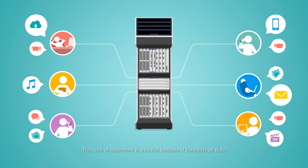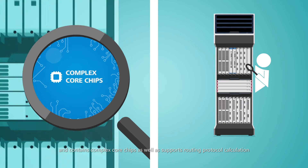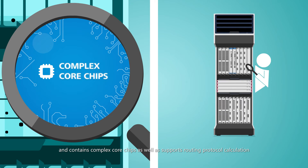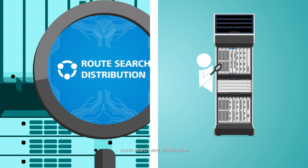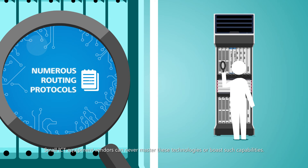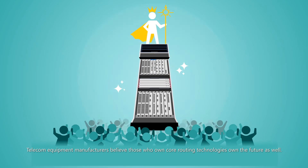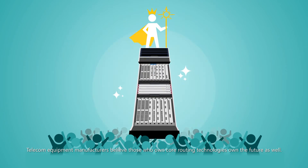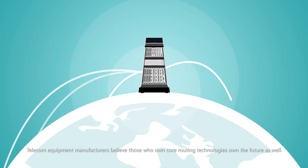The core of a network is a router because it forwards all data and contains complex core chips, as well as supports routing protocol calculations, route search and distribution, and numerous routing protocols. Small ICT equipment vendors can never master these technologies or boast such capabilities. Telecom equipment manufacturers believe those who own core routing technologies own the future as well.